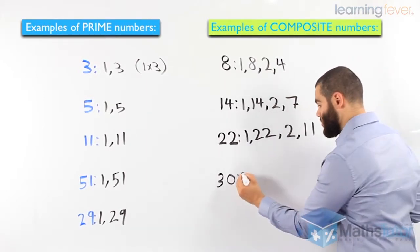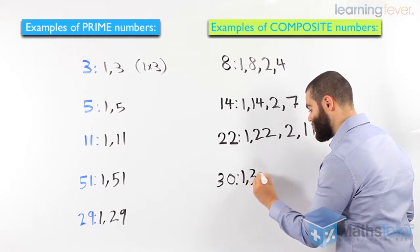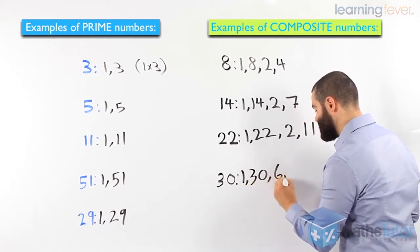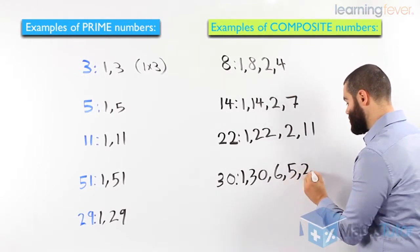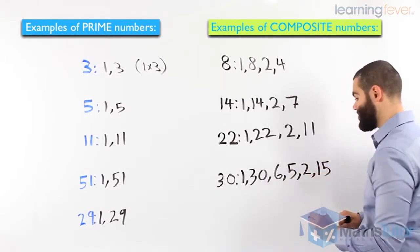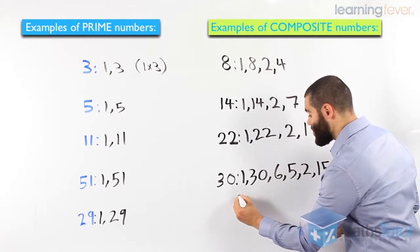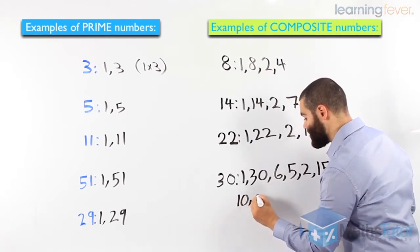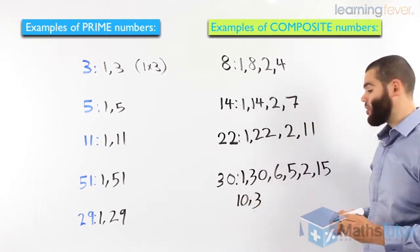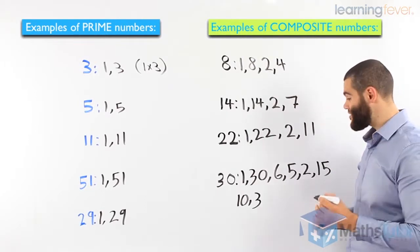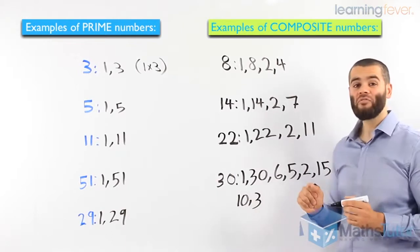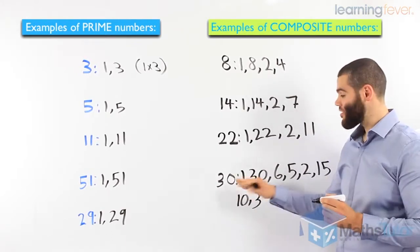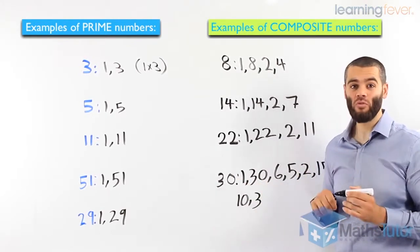30. 1 times 30 makes 30. 6 times 5 also makes 30. 2 times 15 also makes 30. So as you can see here, 1, 2, 3, 4, 5, 6, 7, 8 factors. Therefore, it's a composite number. It has more than 2 factors.